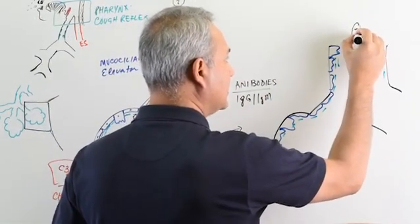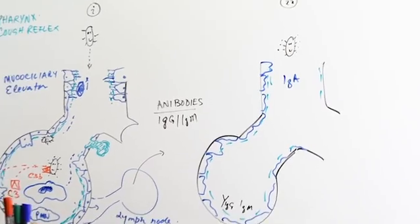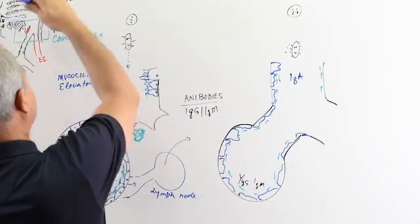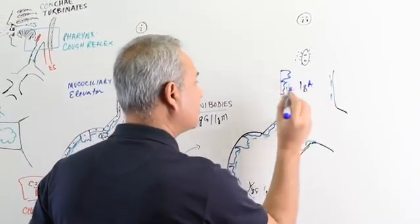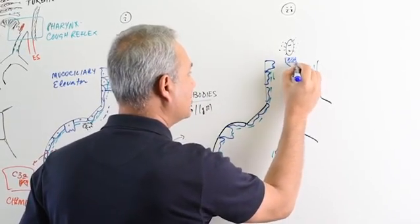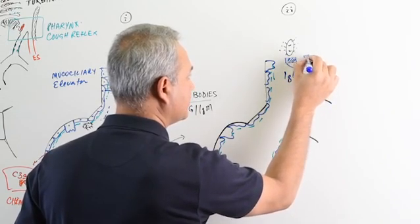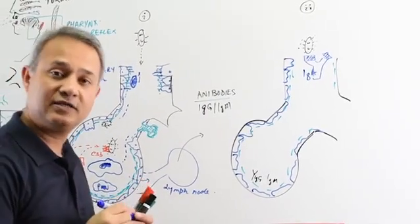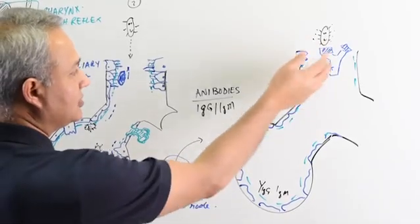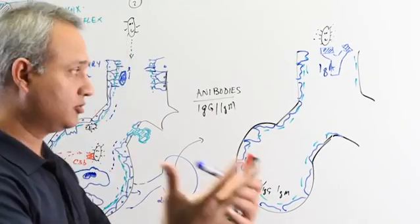On re-exposure, when the pathogen tries to enter, the first possibility is that IgA on the mucosal surface will bind with the pathogen, preventing it from binding to epithelial cells and causing damage. The pathogen-IgA complex is then cleared out through the mucociliary system and either swallowed or expelled.